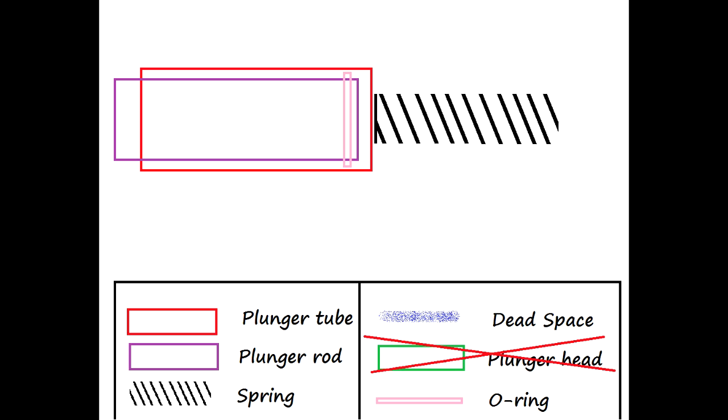Next is the reverse plunger tube system. This was used in some of the N-Strike blasters prior to the Elite line. The main advantage of the reverse plunger tube system is the reduction in space used.